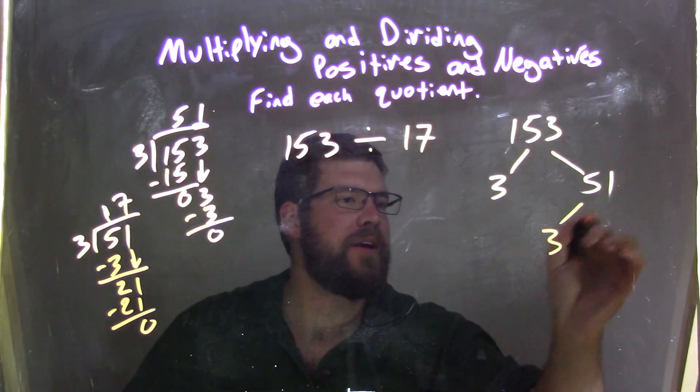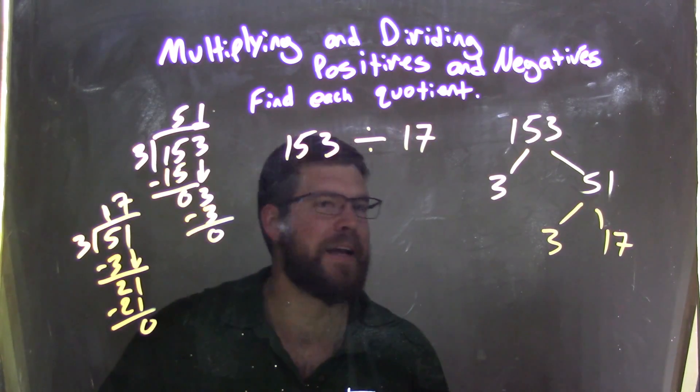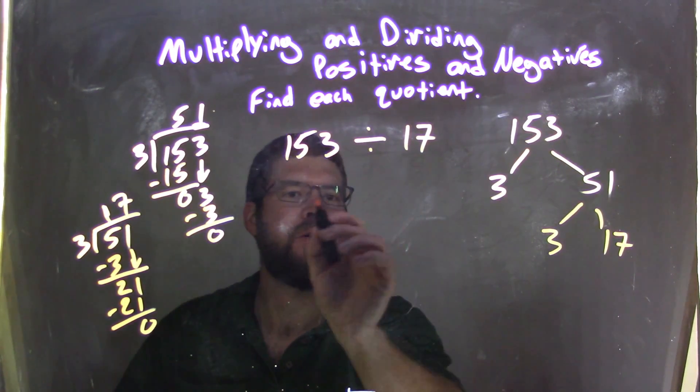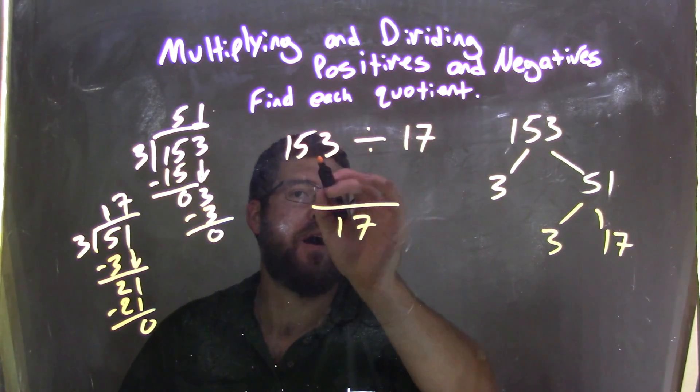And so 51 is 3 times 17. And now I'm kind of done breaking it down. So I'm going to rewrite this fraction with 17 in the denominator. It's easier for me to see. And it's division here, because that's really what's going on, right?